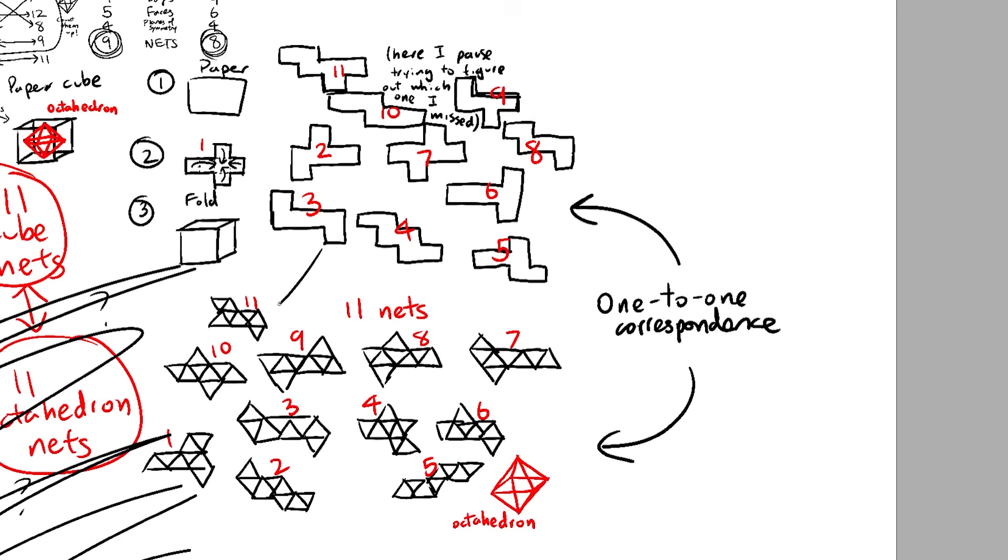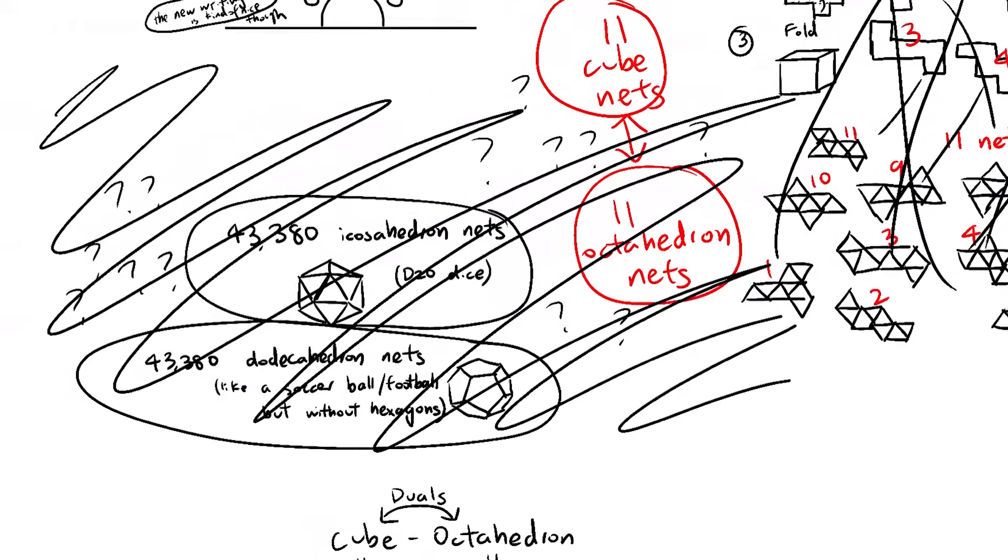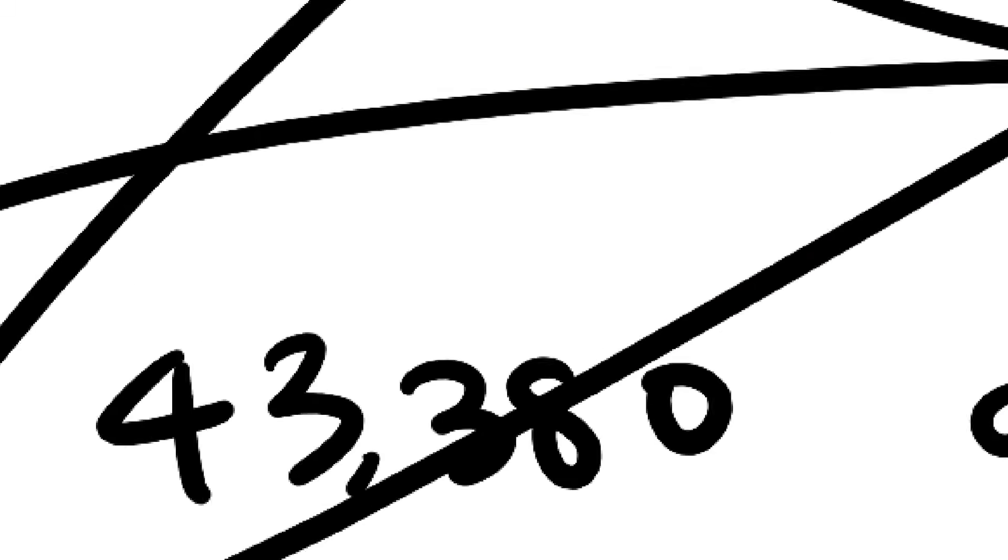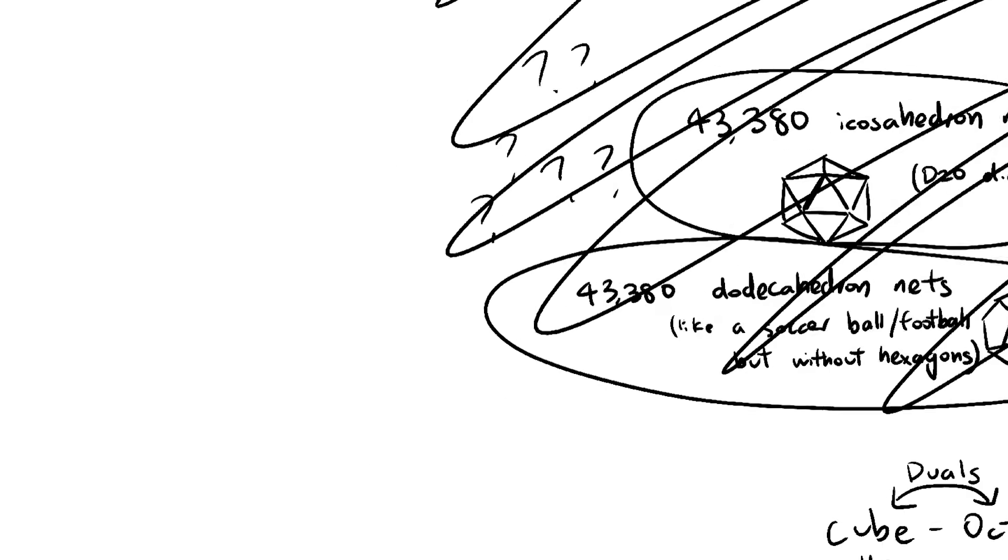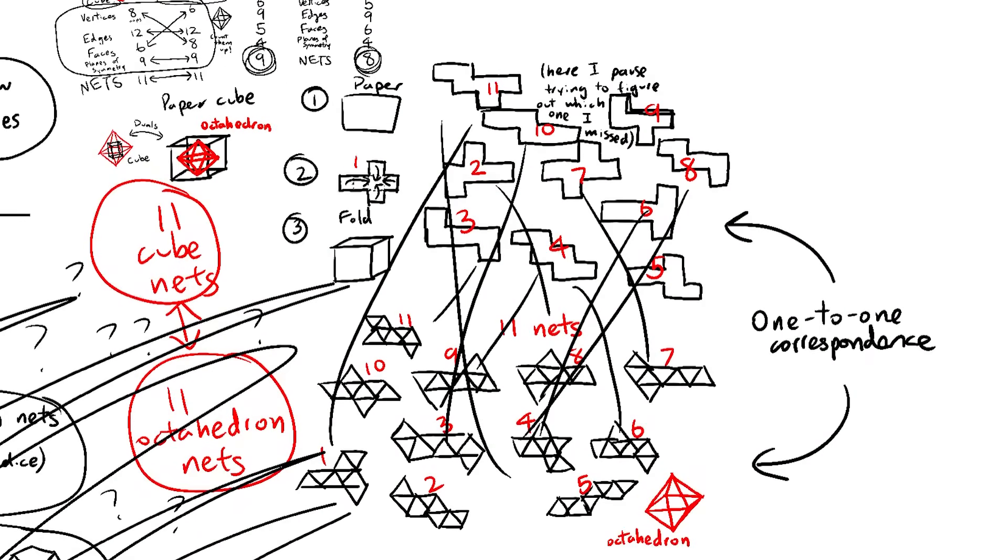Of course, we could just randomly match them up, but we aren't going to be able to do the same thing for icosahedrons and dodecahedrons because we're sure as hell not going to manually match up 43,000 nets. So what we want is to find some sort of matching rule that can be extended to 43,000 nets.